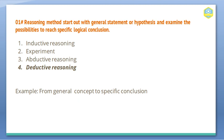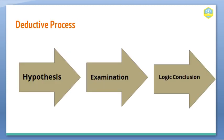First, deductive reasoning moves from a general concept to a specific conclusion. It works in practical life, in the lab, and in experiments — anything we have to prove. So if we're going to prove something, we go through a process of examination and observation. Deductive reasoning is a process which generates a general concept into a specific, logical conclusion — from a generalization to a logical conclusion. It works in three or four steps.